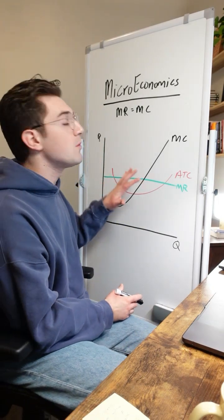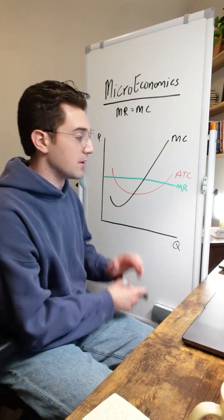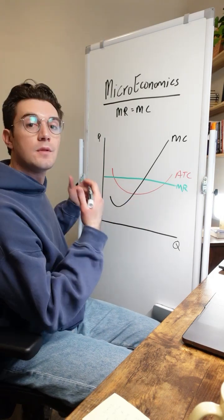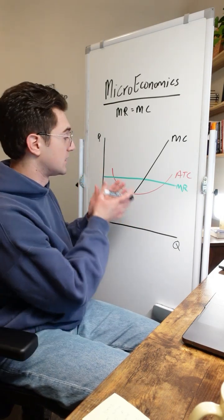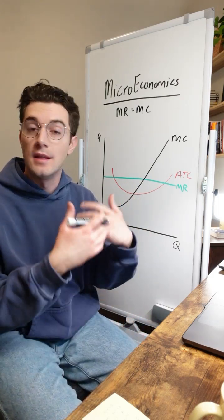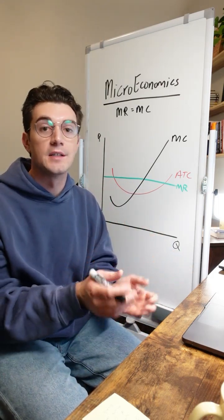All right, now with that being said, let's start with a perfectly competitive market here. This is how their cost curves would look. The primary distinction being that the marginal revenue curve is horizontal because this firm is a price taker. They've just got to accept whatever the market price is for their good.